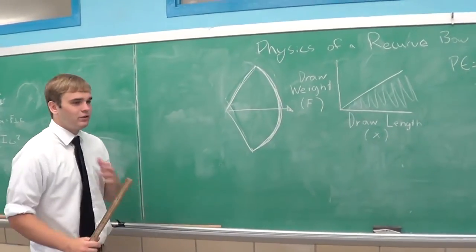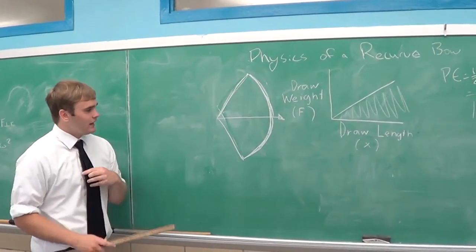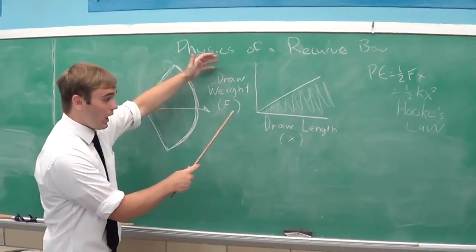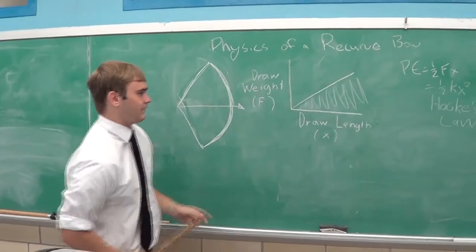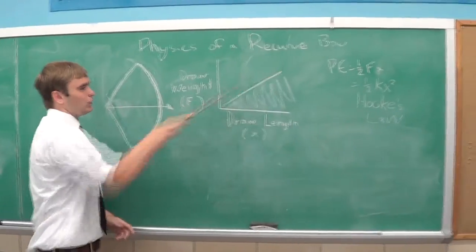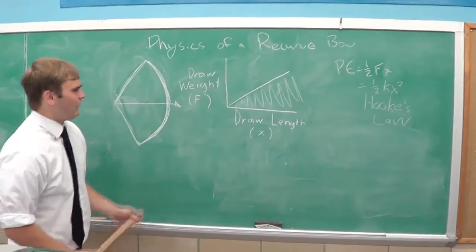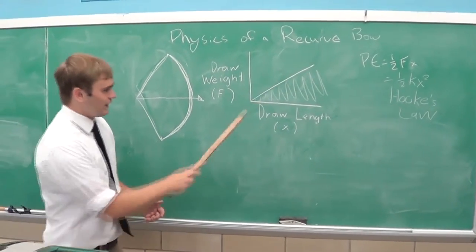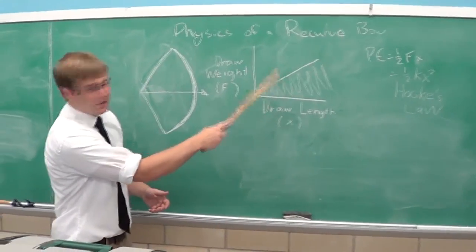Now, the potential energy is stored in the tension of the bow string, where the draw weight is in the y-axis and the draw length is in the x-axis. This creates a linear relationship between the two, as you can see by this beautifully drawn graph. Now, right here, you see we've shaded in the area under it.